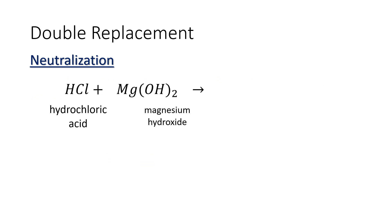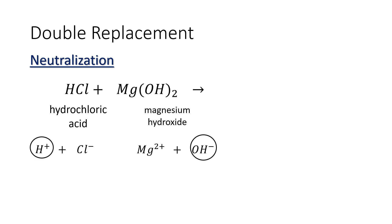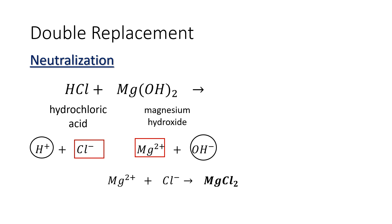Another example of a neutralization reaction is the reaction of hydrochloric acid and magnesium hydroxide. Hydrochloric acid is formed by the combination of hydrogen and chloride, while magnesium hydroxide is formed by the combination of magnesium and the polyatomic anion hydroxide. So in this case, hydrogen will combine with hydroxide, while magnesium will combine with the chloride. The combination of magnesium and chloride will form magnesium chloride, which will be the salt.